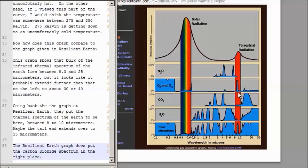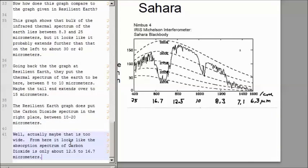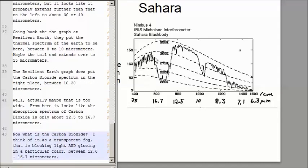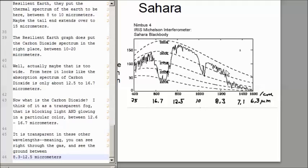Now, the Resilient Earth graph does put the carbon dioxide spectrum at the right place, right in here, between like 10 to 20 micrometers. Maybe that is too wide. From here, it looks like the absorption spectrum of carbon dioxide is only from about 12.5 to 16.7 micrometers. That's this depression right here. Now, what is the carbon dioxide? I think of it as a transparent fog that is blocking light and glowing between 12.6 and 16.7 micrometers. The carbon dioxide gas is transparent in these other wavelengths, meaning you can see right through to the ground if you're viewing in colors between 8.3 to 12.5 micrometers.